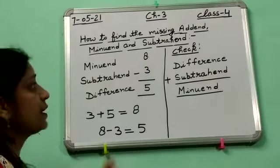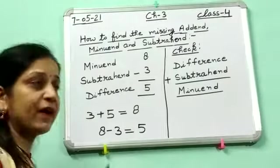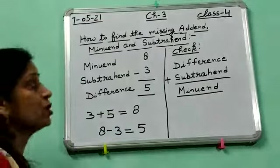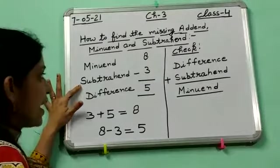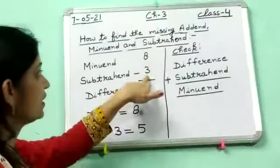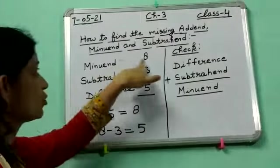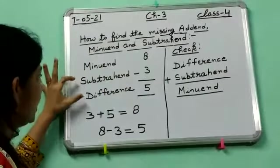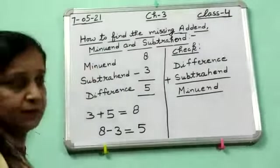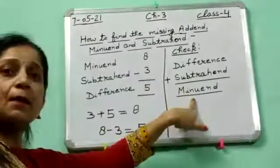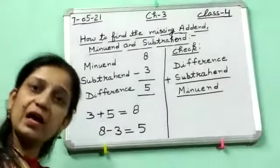Now see one more concept. If a subtraction sum is done by you and you have to check whether your sum is correct or not, so for checking what you have to do? You have to add the subtrahend and the difference. Means 3 and 5 you have to add — what comes? 8. 8 is equal to the minuend. It means if the sum of these both is equal to the minuend, it means your subtraction sum is correct. Understood all of you?